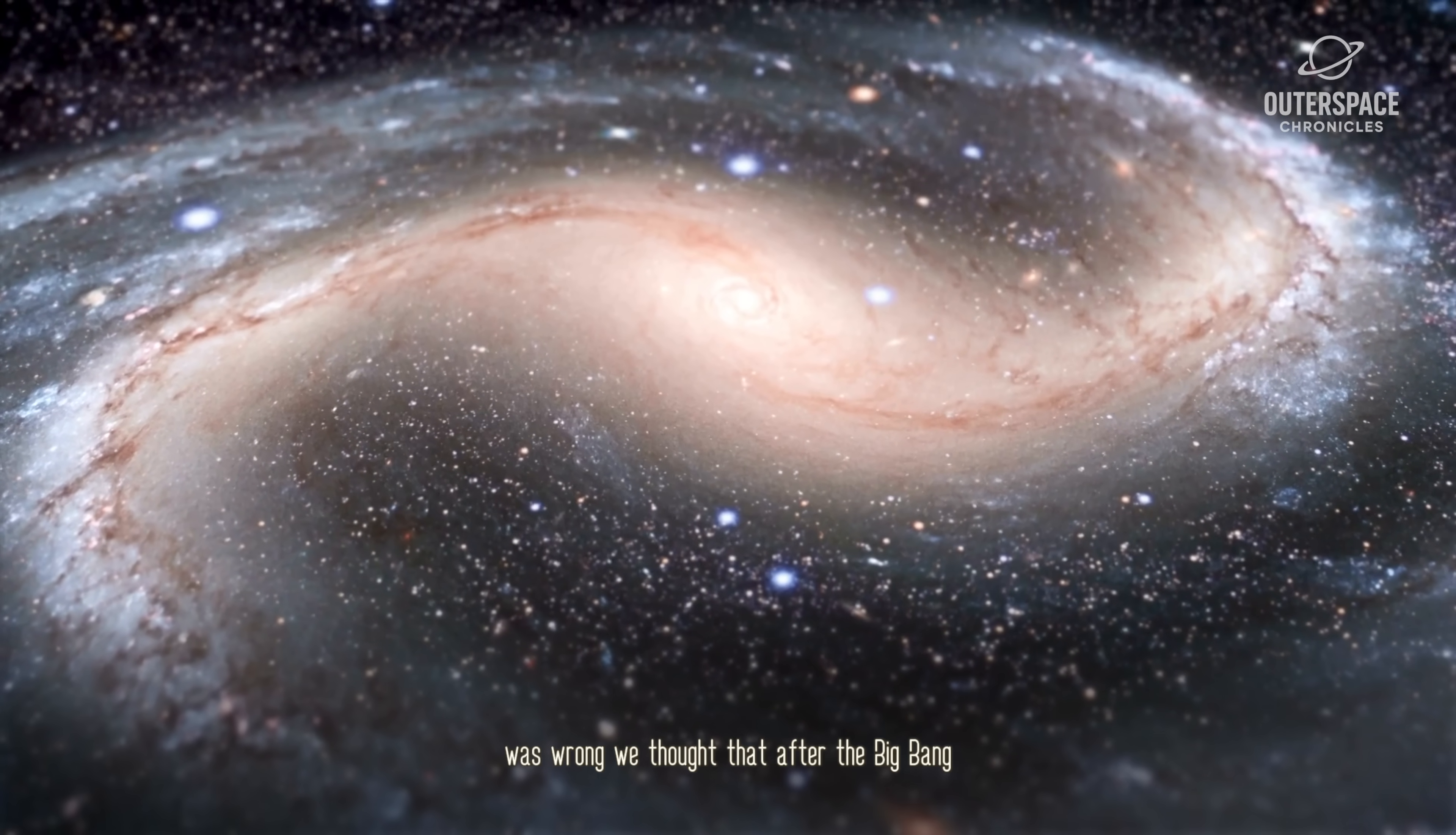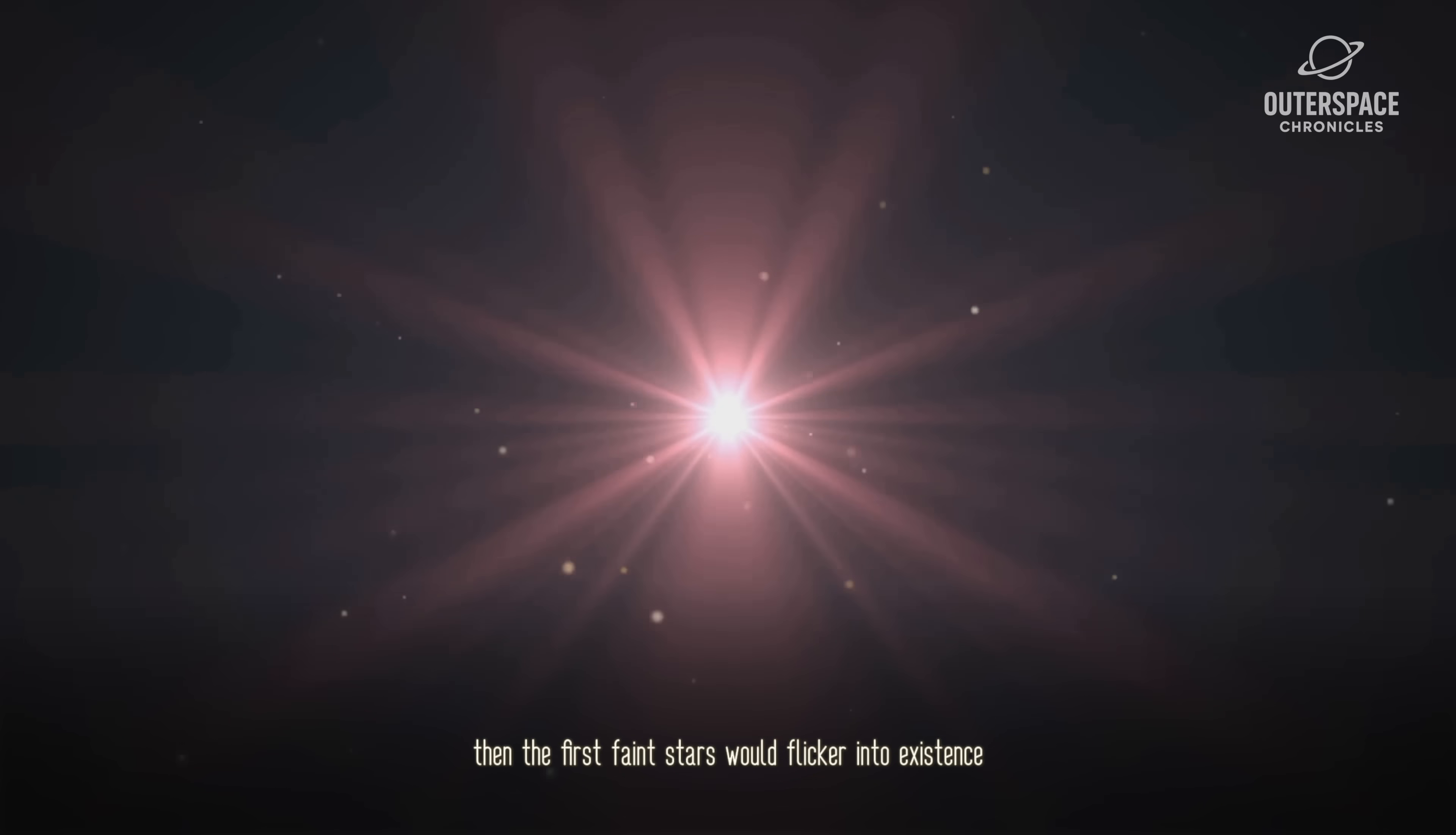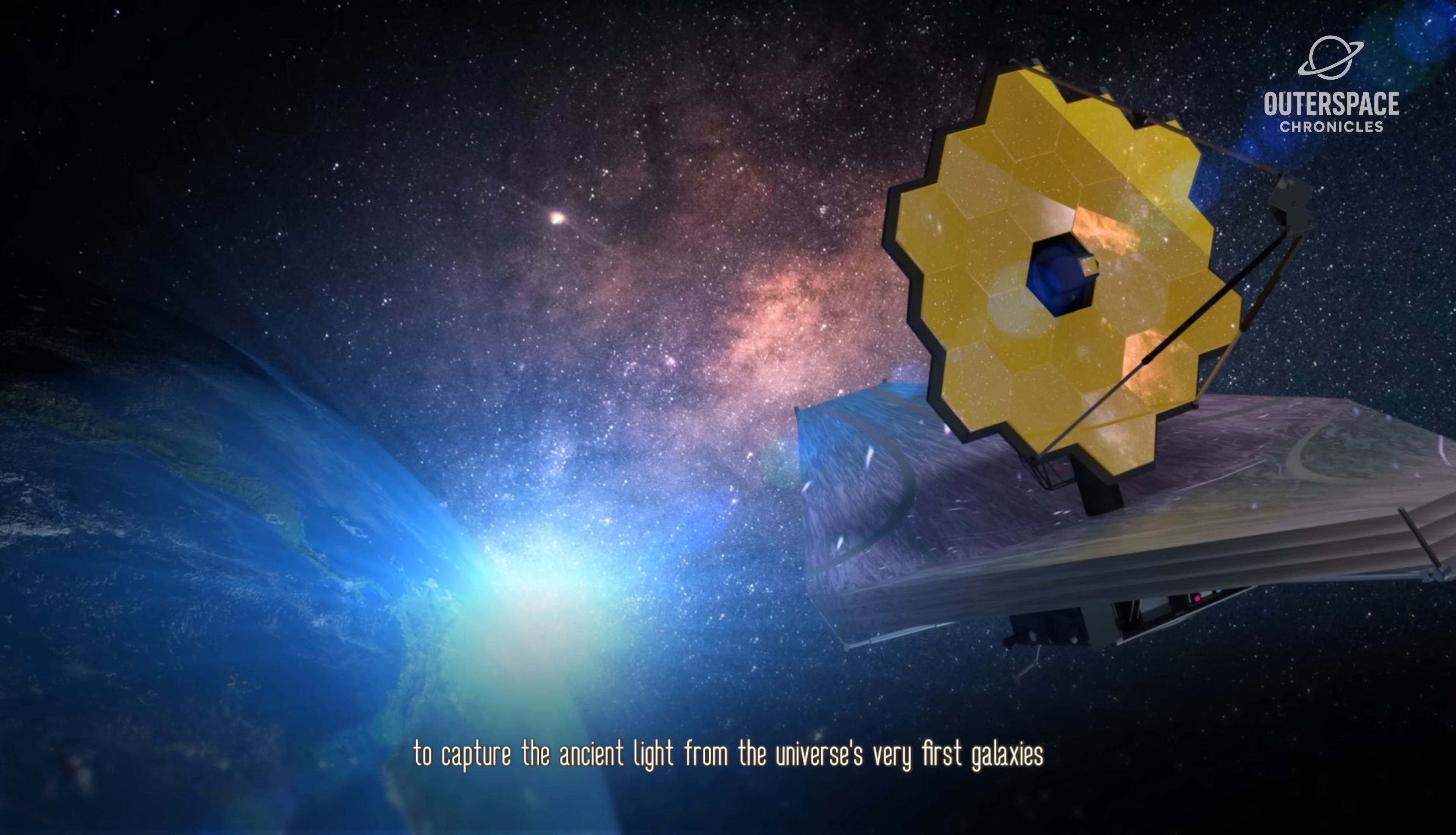We thought that after the Big Bang there was a profound starless darkness that lasted for hundreds of millions of years. Then the first faint stars would flicker into existence. The James Webb Telescope was built specifically to see that primordial dawn, to capture the ancient light from the universe's very first galaxies.